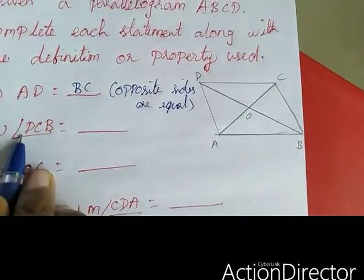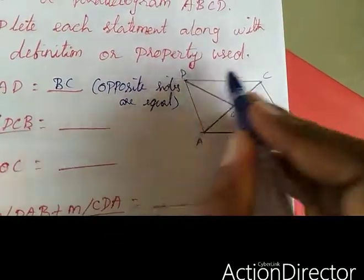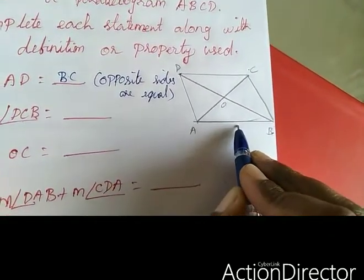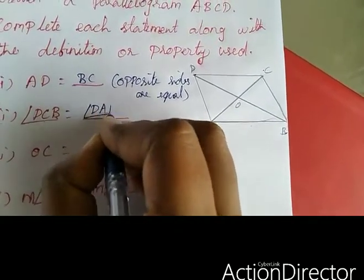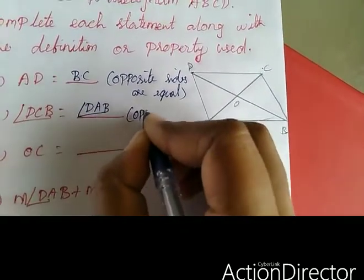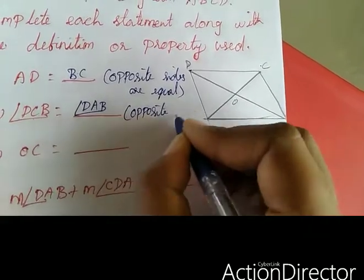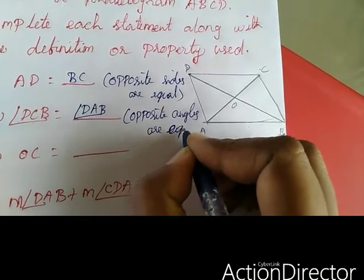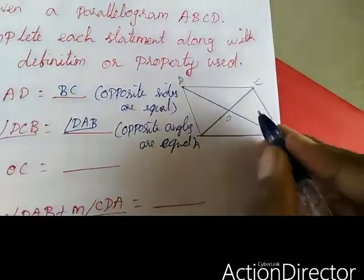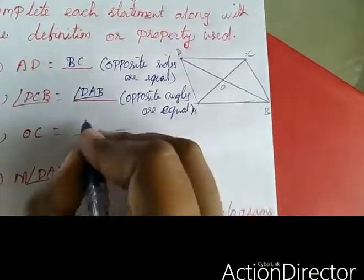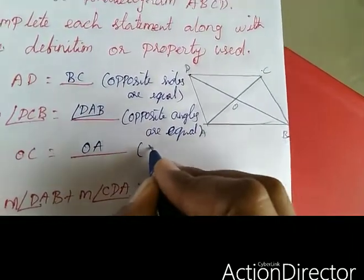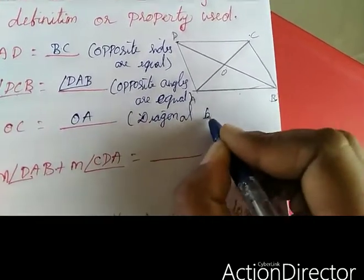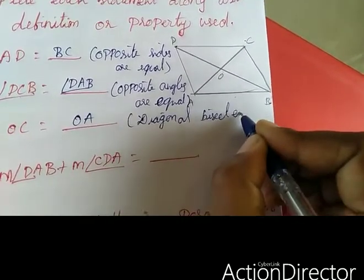Second, angle DCB equal to angle DAB, because opposite angles are equal. Third, OC equal to OA, by the property that diagonals bisect each other.